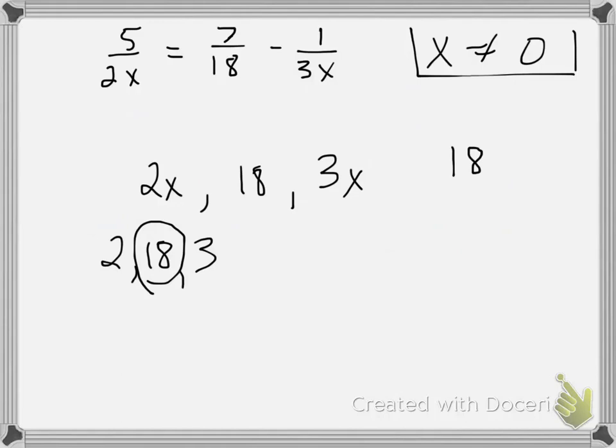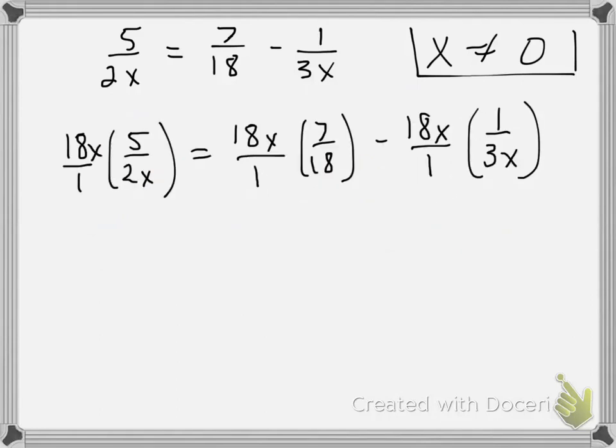But notice we also have the x's, which is what's making it a rational equation. And so I'm also going to have an x in what I multiply every fraction by. In other words, if I multiply every fraction by 18x, I will be able to eliminate the fractions themselves.